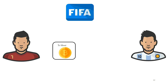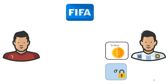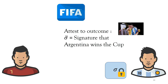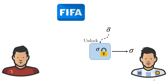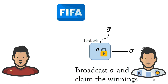Ronaldo creates a transaction that, if submitted by Messi, will transfer the money. But instead of giving the full signature, Ronaldo locks the signature in a particular way and gives this locked signature along with the transaction to Messi. Later, FIFA attests to the outcome — that Argentina won — and Messi can use FIFA's signature to unlock the transaction signature, broadcast it to the Bitcoin network, and claim the funds.